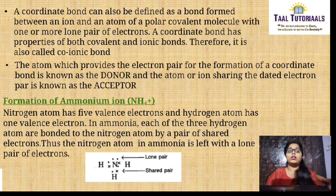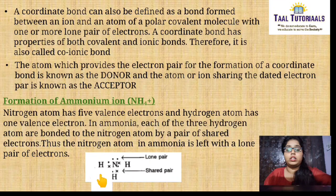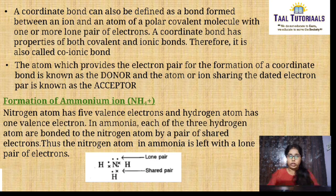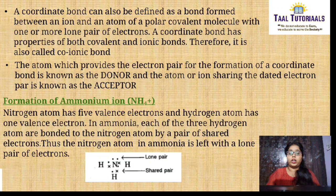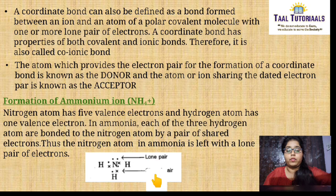Formation of ammonium ion: nitrogen atom has five valence electrons and hydrogen atom has one valence electron. For one nitrogen, there are three surrounding hydrogens. Each of the three hydrogen atoms are bonded to the nitrogen atom by a pair of shared electrons. Thus the nitrogen atom in ammonia is left with a lone pair of electrons. This lone pair and the shared pairs with hydrogen can be seen clearly in the diagram.